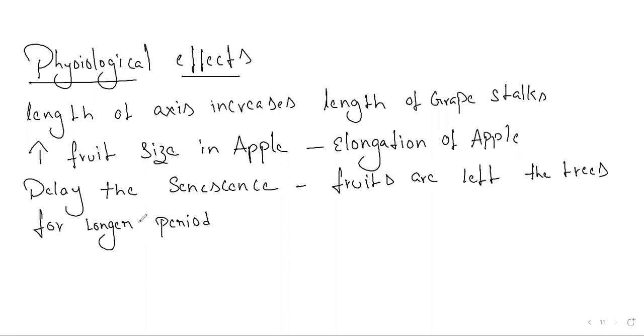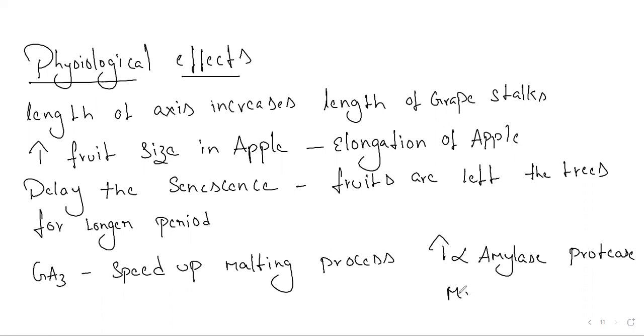GA3 is used to speed up the malting process in brewing industry. They increase alpha amylase and proteases, improving the malting in barley.